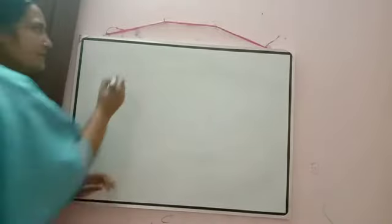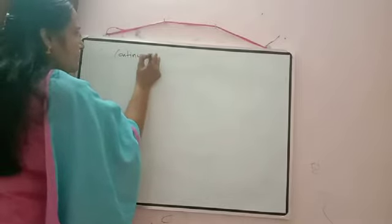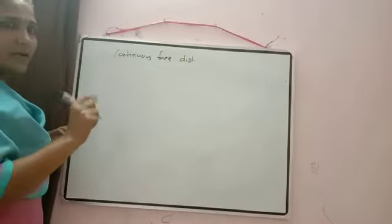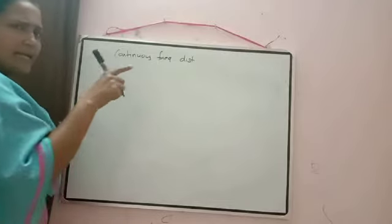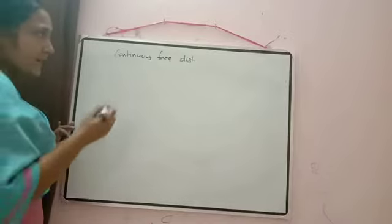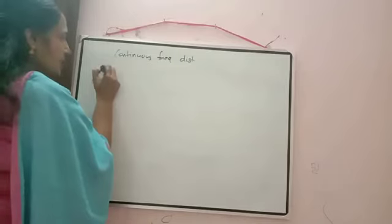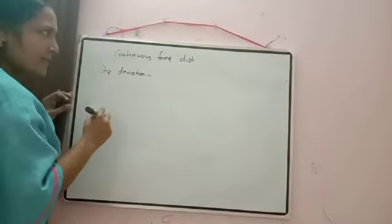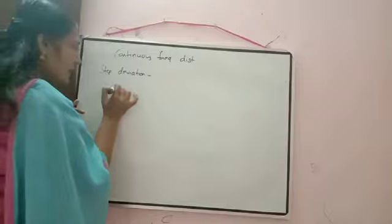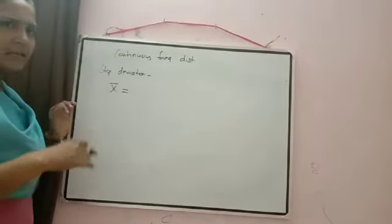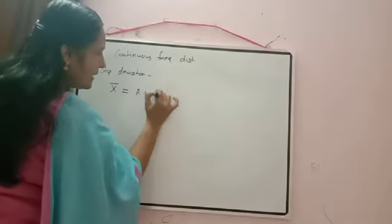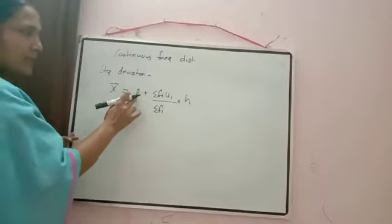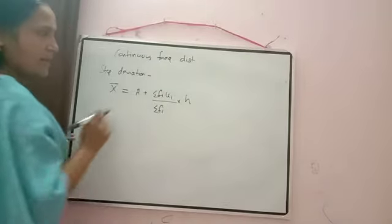In case of continuous frequency distribution — when class intervals are given — the first formula is the same: x̄ = Σfᵢxᵢ / Σfᵢ. One more method is there to calculate the mean: the step deviation method, which is easier when we calculate the mean in continuous frequency distribution. The formula is: x̄ = A + (Σfᵢuᵢ / Σfᵢ) × h.